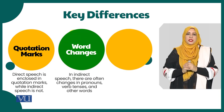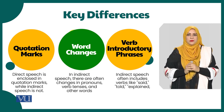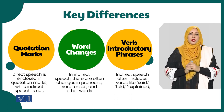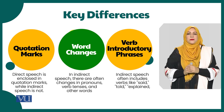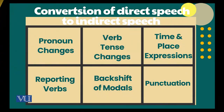In indirect speech, we need to change pronouns, verb tense, and other words. In direct speech, we also need to add reporting verbs — for example, said, told, exclaimed. There are certain rules which need to be followed when converting direct speech into indirect speech: pronoun change, verb tense change, time and place expression, reporting verb, backshift of modals, and punctuation.